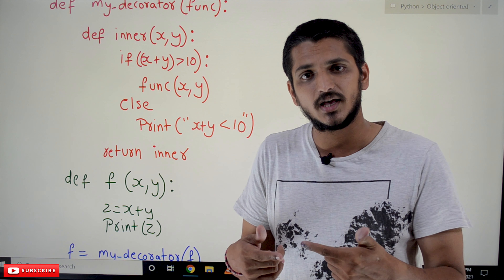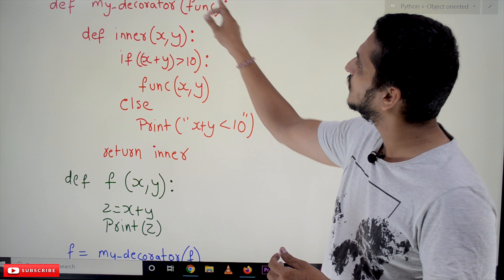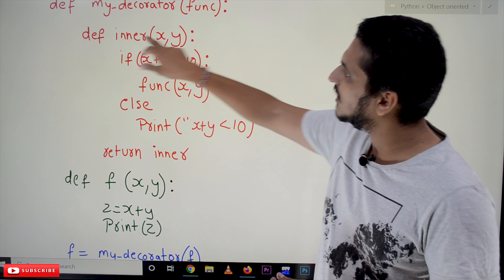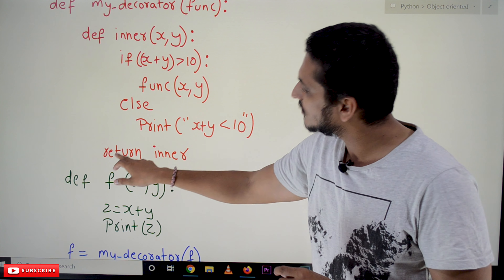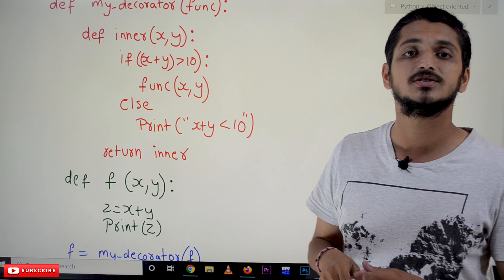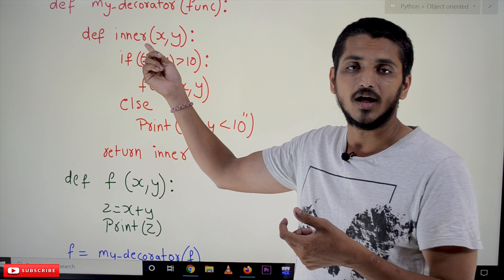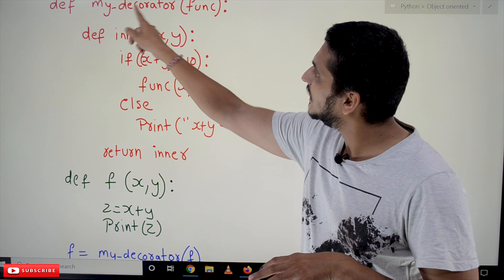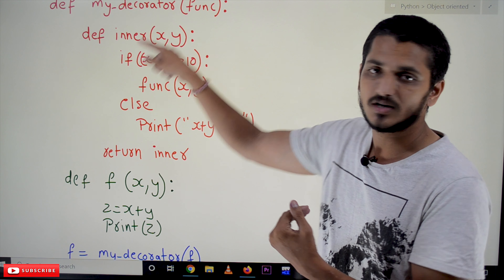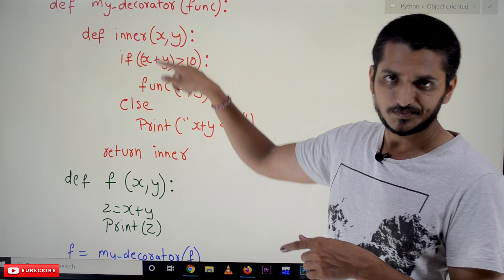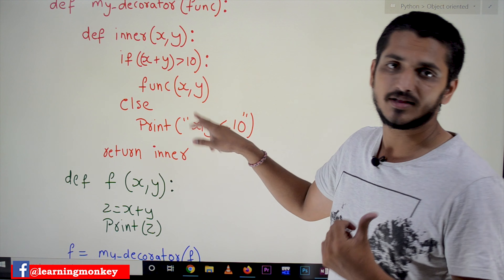In order to do that, we are using a new function. The new function `my_decorator` is a function taking an input variable. Inside `my_decorator`, we have an inner function named `inner`. This `my_decorator` function is returning the reference of this inner function. This concept we discussed in our previous class — we are returning the reference of the inner function.